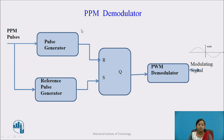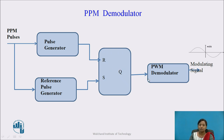Next is the PPM demodulator. The PPM pulses are applied to the pulse generator. The same PPM pulses are also applied to the reference pulse generator. Both these inputs are given to an SR flip-flop. The SR flip-flop output is given to the PWM demodulator, and at the output we get the modulating signal.